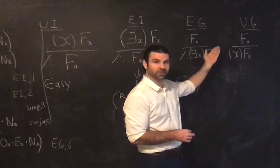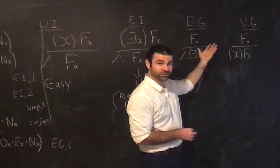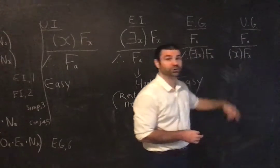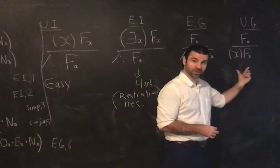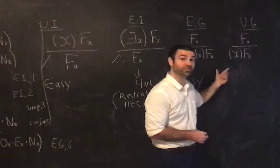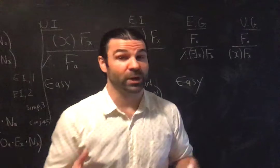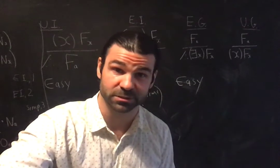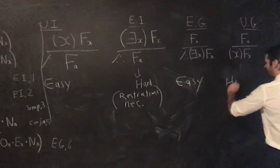It's universal, therefore I'm either going to or coming from the universal quantifier. It's generalisation, thus I am going to the universal quantifier. So I'm going from an instance to a universal statement — from the propositional function being true of an instance to it being true of all things. That is the rule of universal generalisation. Quite clearly, this will require some quite heavy restrictions. We need to restrict the use of this rule. This is a hard rule.